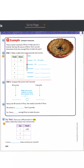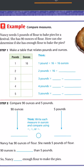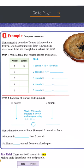Step one says to make a table that relates pounds to ounces. They did the first one for us: one pound equals 16 ounces. For two pounds, that's two times 16 equals 32 ounces. For three pounds, three times 16 — three times 6 is 18, three times 1 is 3 plus one more is 4 — so that's 48 ounces.